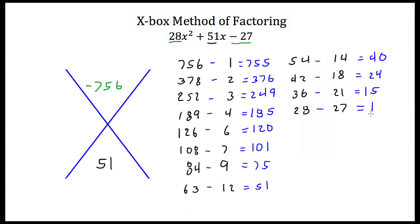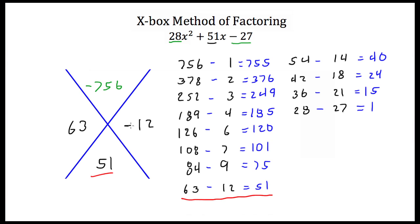Hopefully one of these subtractions will get us 51 — and we do: it's 63 and 12, subtracted, that gives us 51. So our factors are 63 and 12. But when I multiply 63 and 12 I'll get positive 756, not negative 756, so one of these numbers has to be negative. Since 51 is positive, the bigger factor has to be positive, so 63 is positive and 12 is negative. 63 times negative 12 is negative 756, and 63 plus negative 12 is positive 51. So here are our factors.